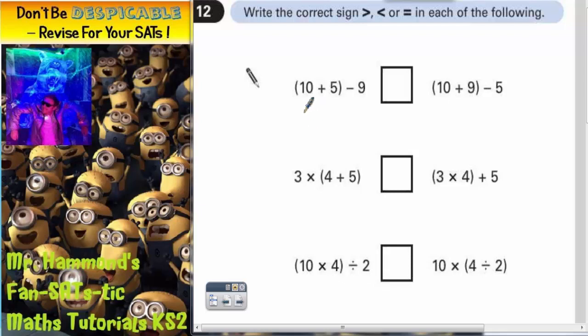So, for example, 10 plus 5 take away 9. We've got to do the bracket first. So 10 plus 5 is 15. So I'm just going to write the answer to that over the bracket and cross the bracket out. Because we've done the bracket now. 10 plus 5 is 15. And now we need to work out 15 take away 9. Well, 15 take away 9 is 6. So the overall answer to this calculation is 6. Write it underneath.